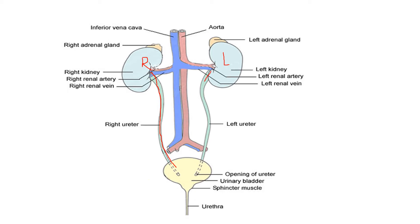From both kidneys you can see tube-like structures — these are the ureters. One is the left ureter and the other is the right ureter. The ureters open into the urinary bladder. Urine passes from the ureters into the urinary bladder. The urinary bladder then opens through a sphincter muscle into the urethra, through which urine is passed out.